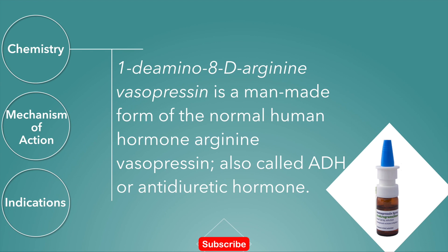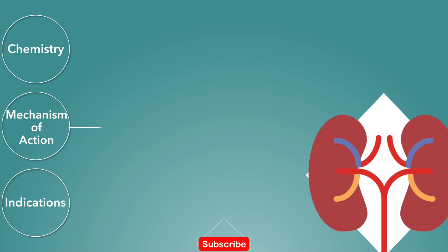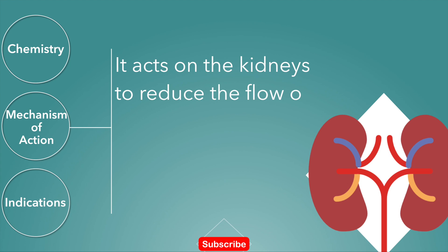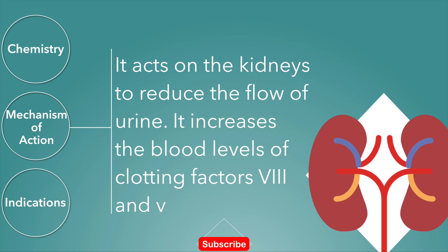In addition, it has little effect on blood pressure, while vasopressin may cause arterial hypertension. Desmopressin acts on the kidneys to reduce the flow of urine. It works by limiting the amount of water that is eliminated in urine by increasing water reabsorption in the renal collecting duct. It also increases the blood levels of clotting factors eight and von Willebrand.